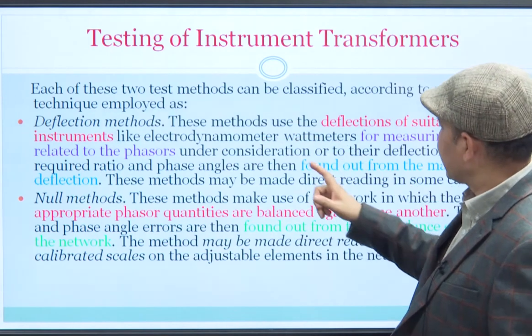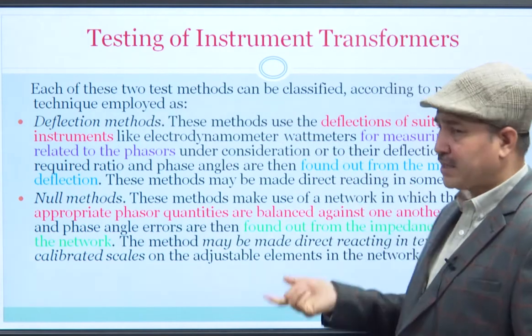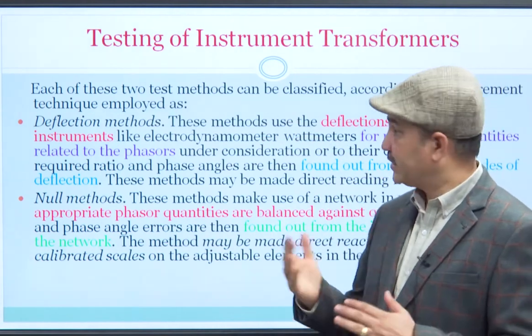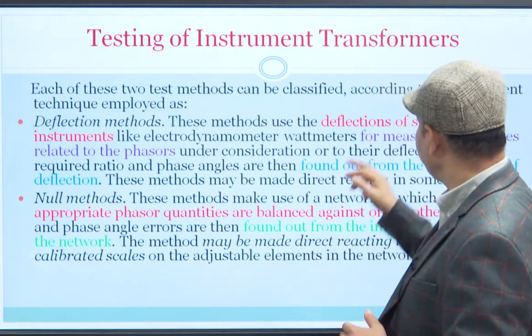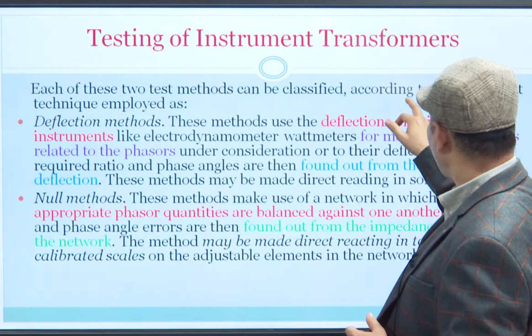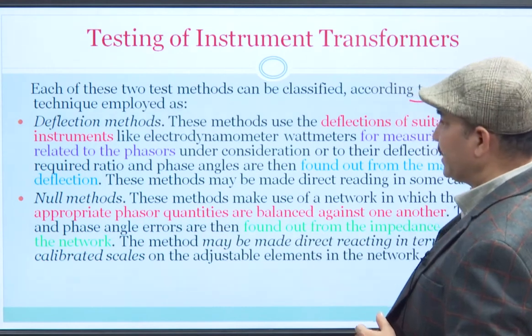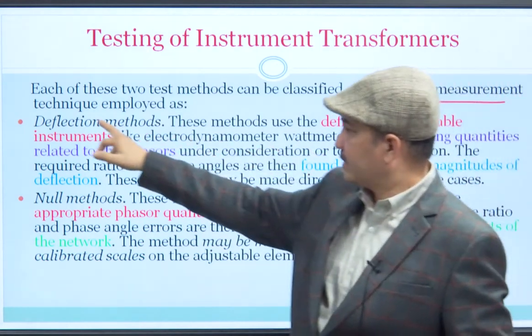Absolute methods do have certain limitations, but they give relatively more confident results. Even comparison methods are not substandard — they are sort of semi-standard methods because the transformer used for comparison is also a standard transformer. Each of these two methods can also be classified by different means according to the measurement technique employed.